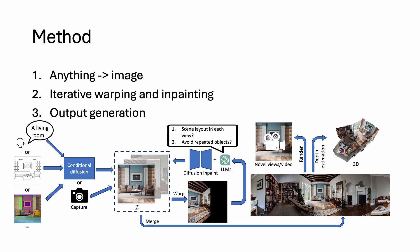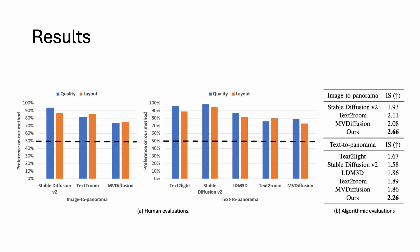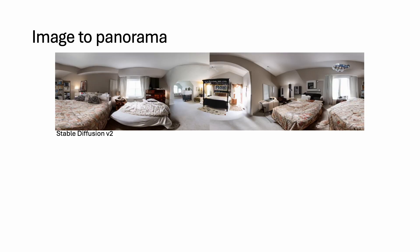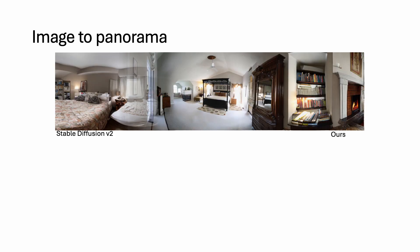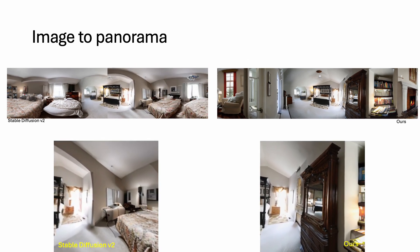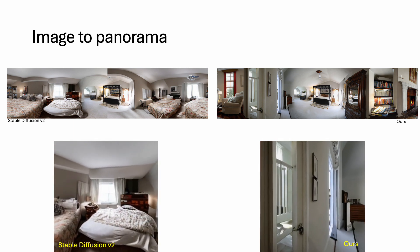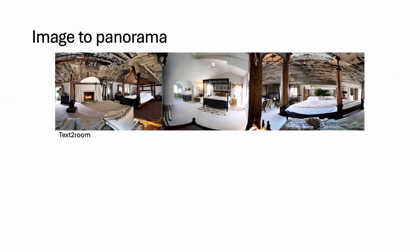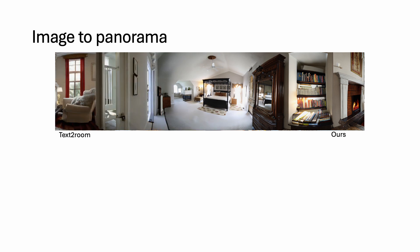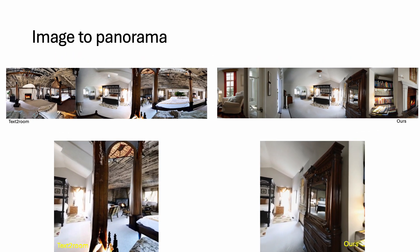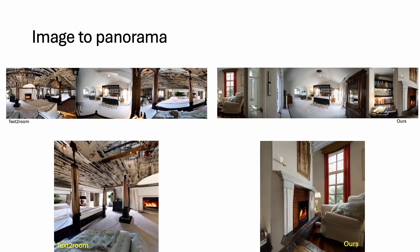Leveraging language models to control diffusion models, our method can automatically avoid generating redundant objects when needed, and detect and correct unsatisfactory diffusion outputs. In the experiment, our method outperformed state-of-the-art methods in both image-to-panorama and text-to-panorama tasks. Stable Diffusion v2 treats the panorama as a single equirectangular image, which cannot smoothly close the 360-degree loop. Text-to-Room and MV Diffusion have no mechanism to automatically infer the 360-degree scene layout in multiple views, resulting in repeated beds in a single bedroom.